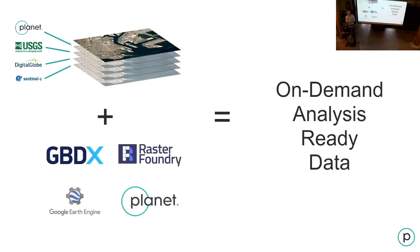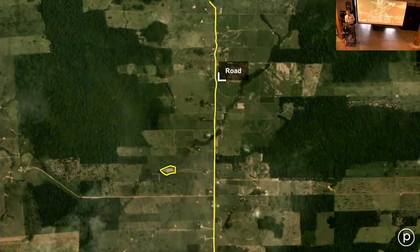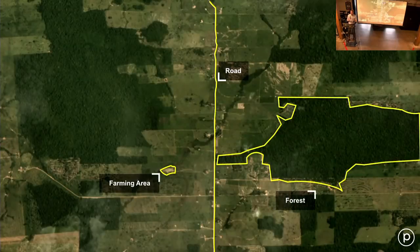Ideally, these systems are able to deliver ARD on demand — so instead of just producing analysis-ready data once, you let a user customize the parameters they want and get the ARD for their particular problem. Once you've got the imagery properly formatted and accessible, the next piece we really need to get right is this label training data I mentioned before, and I think it's a really fundamental piece to understand.